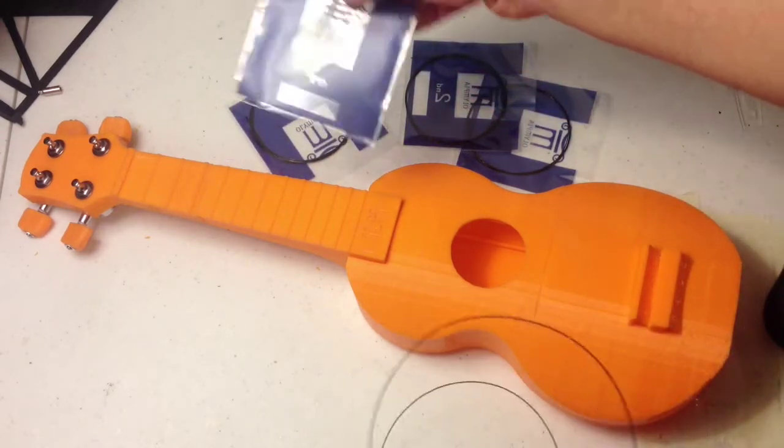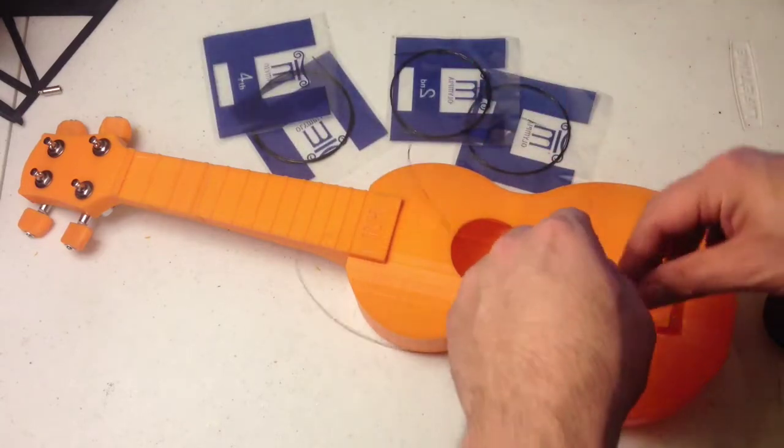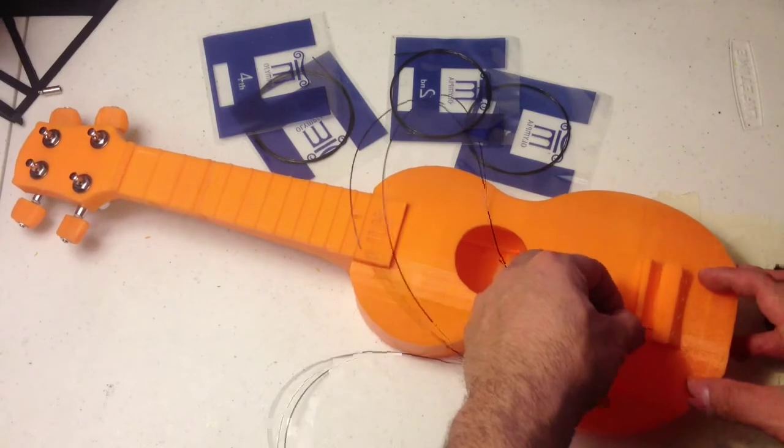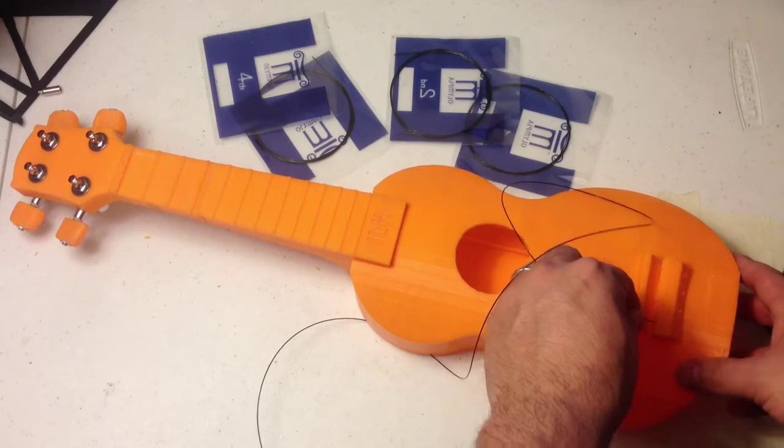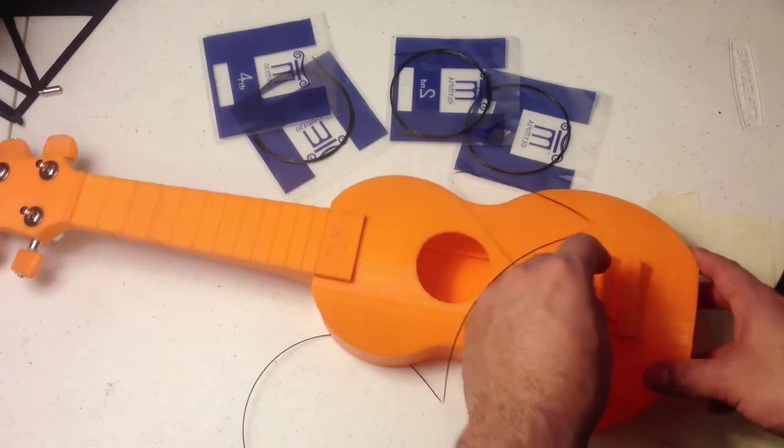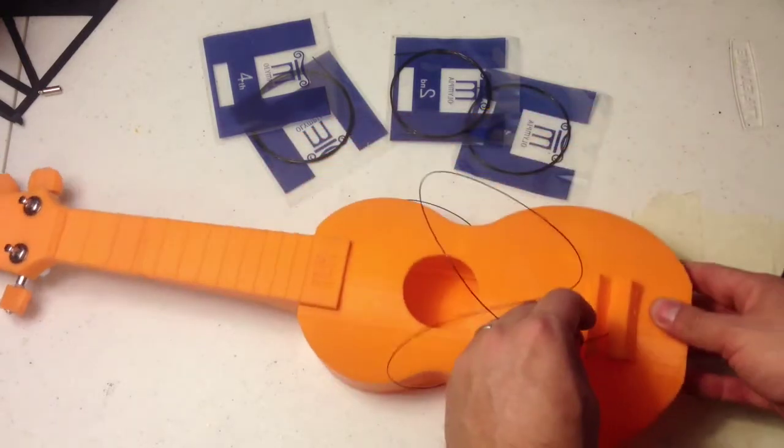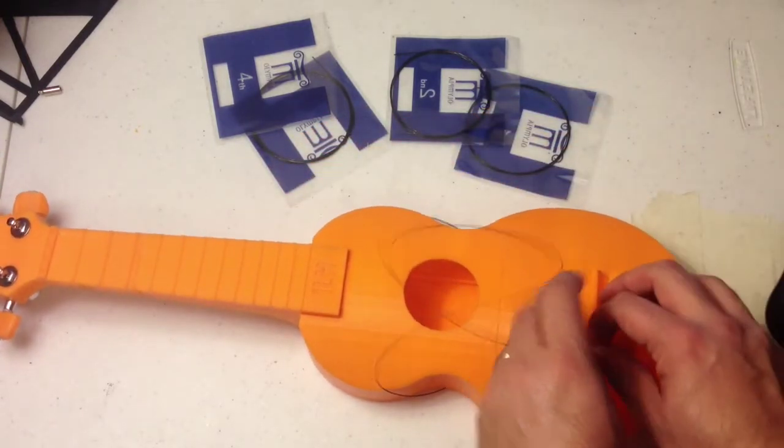I'm going to start with the 4th string here. It's actually a thinner string - it's not like a guitar where they're thicker. The 4th string is a high-gauge piece. I string it from this end, and I like to start on this end here. So let me get it through the hole.